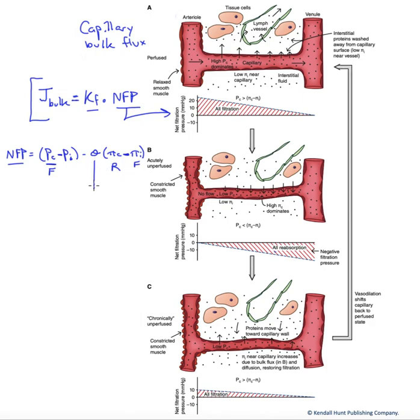Now note, we do have the reflection coefficient in here. It's important to note that these oncotic pressures, the osmotic pressures due to the proteins, are dependent upon whether the proteins are trapped on one side or the other. That is indicated by this reflection coefficient, which is this unitless measure of the permeability of these proteins.